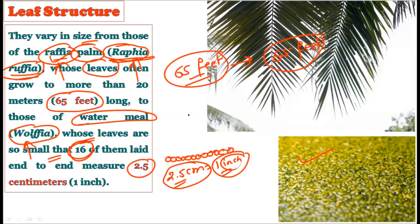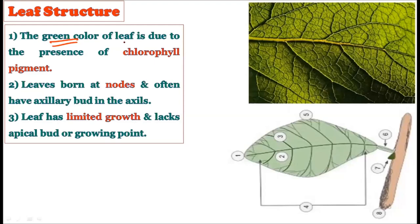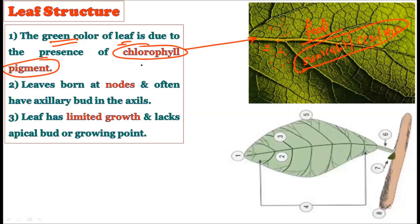Whatever the green color of the leaf is, it is primarily due to the presence of the chlorophyll pigment. This chlorophyll pigment is largely responsible for photosynthesis — creating food by using sunlight, CO2 from the atmosphere, and water from the soil. The chlorophyll molecule is abundantly present in the leaf, and due to the green color of this chlorophyll molecule the whole leaf turns green. You will find that 99% of the time the leaves of plants are green.